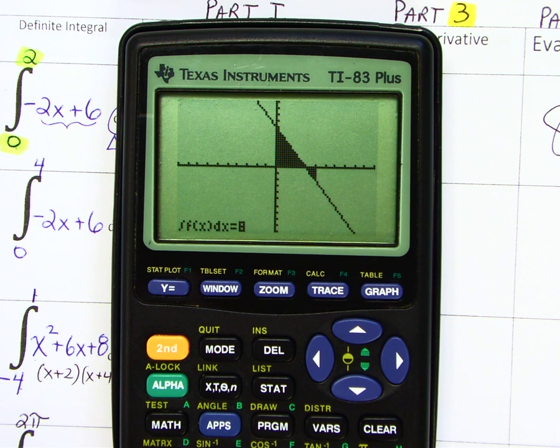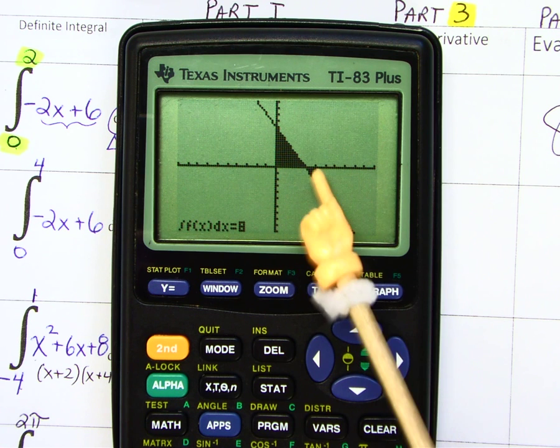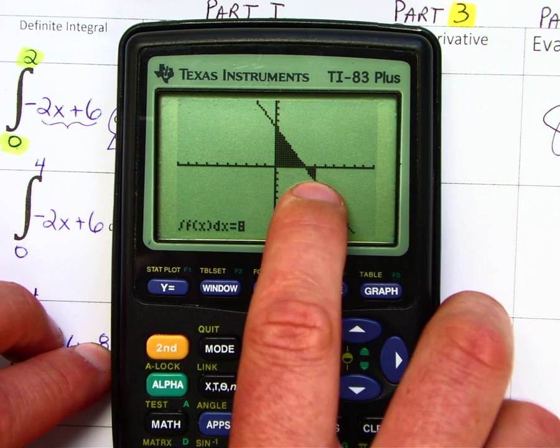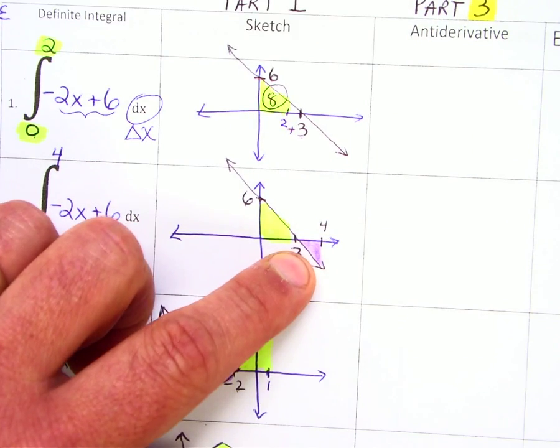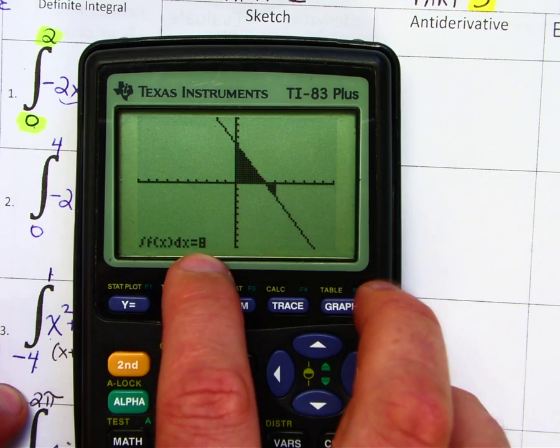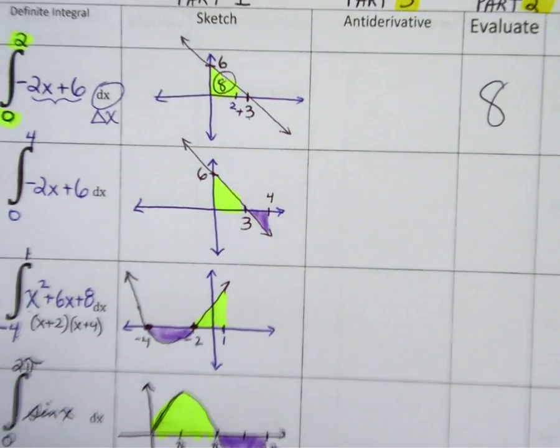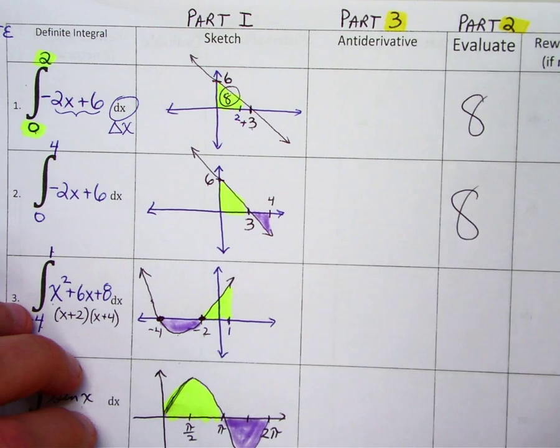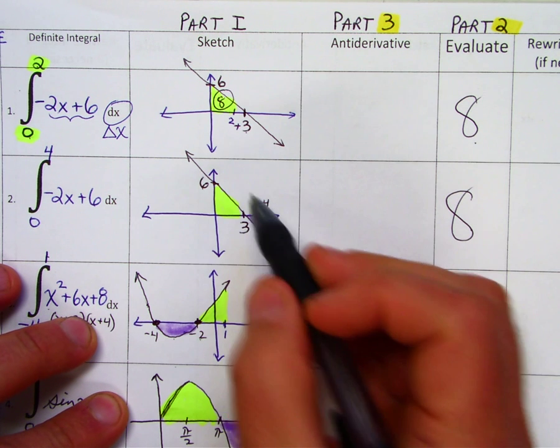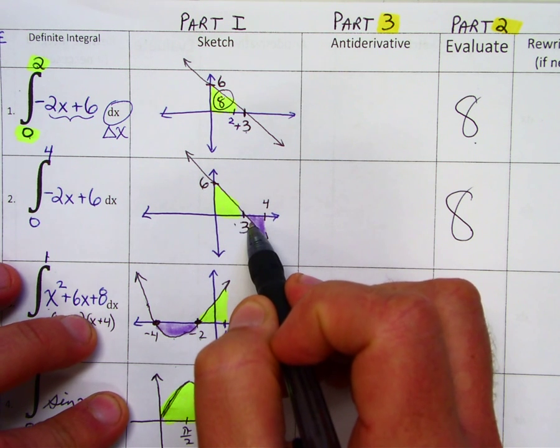That's the upper bound. So not only shaded in that little missing triangle there, but it's shaded all the way to 4. That little guy there is that little purple thing there. Now the evaluate answer for this is 8.